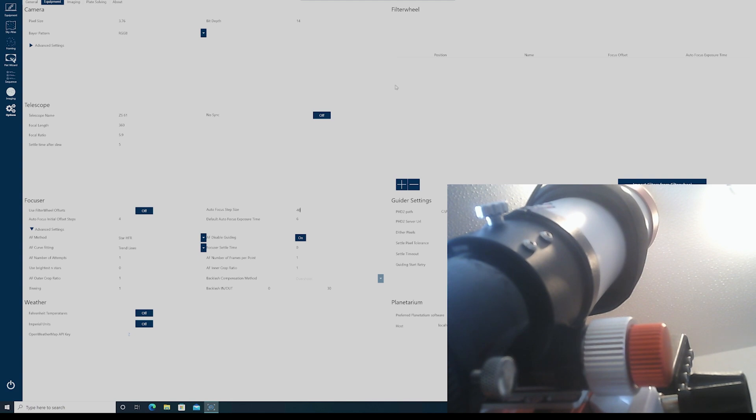So one other thing to point out, you can put in focus offsets for filters. I'm not going to do that in this video. So if you've got a filter wheel, you can set all them at different focus points. I'd like to set offsets if you so wish to.